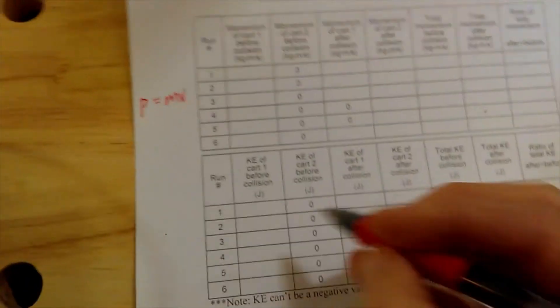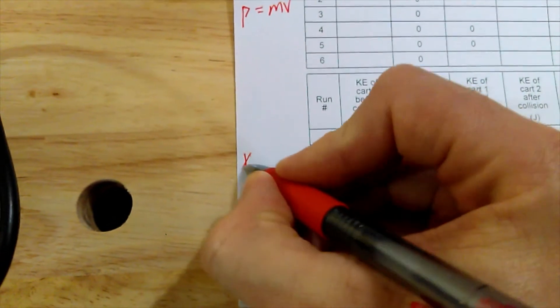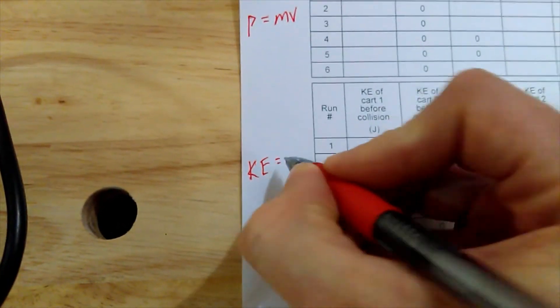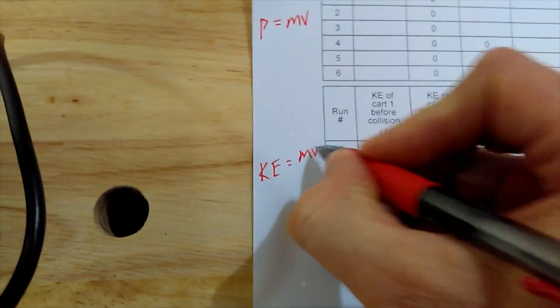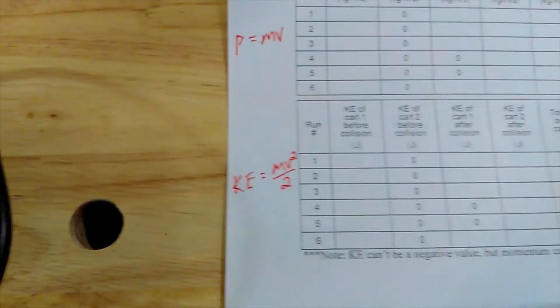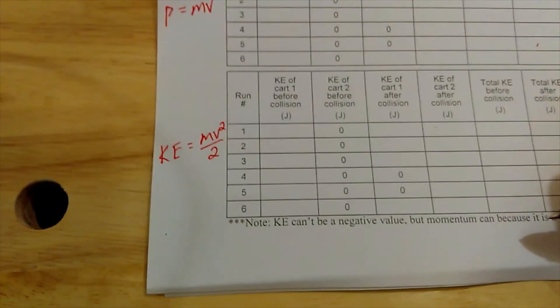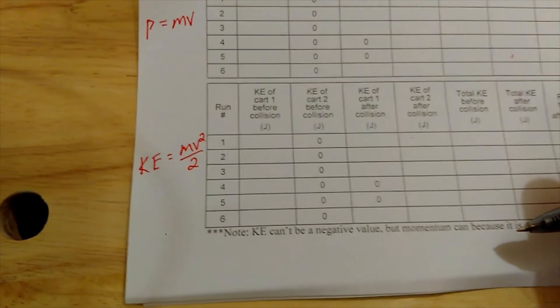The bottom chart is very similar, except you're calculating kinetic energy now. This kinetic energy equals the mass times the velocity squared over two. Notice there's a note: kinetic energy is not a vector. It can't be a negative number.